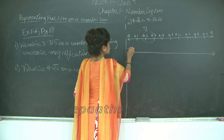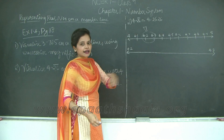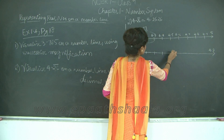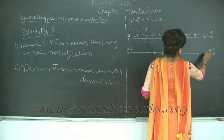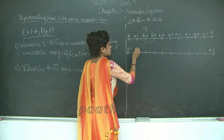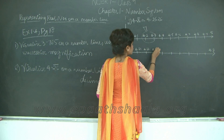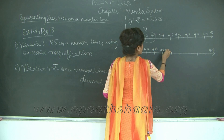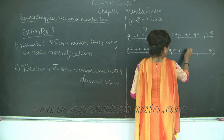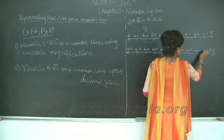My intervals are 4.2 and 4.3. I divide this number line into 10 equal parts, so each section increments by 0.01. This gives us 4.21, 4.22, 4.23, 4.24, 4.25, 4.26, 4.27, 4.28, 4.29.